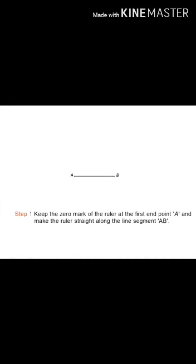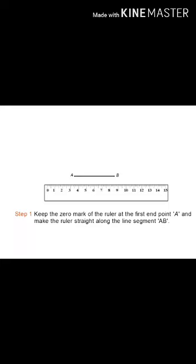For measuring the length of the line segment AB, keep the zero mark of the ruler at the first end point A. You can use a centimeter ruler and make the ruler straight along the line segment AB.